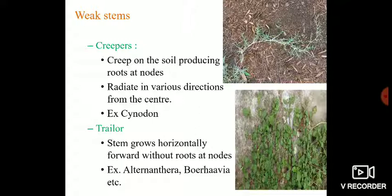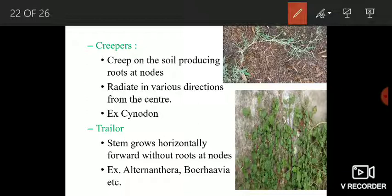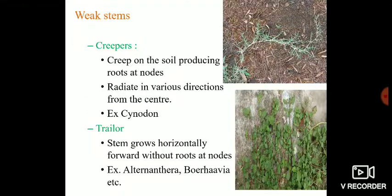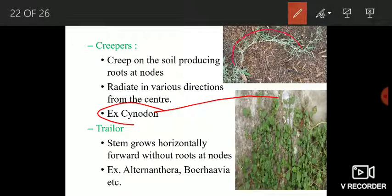First of all we will discuss creepers. Those plants which creep or grow on the soil surface and produce roots at their nodes are known as creepers. These plants radiate in all directions from the center. The example is Cynodon, and you can see on the underside of the Cynodon stem there are roots produced at the nodes.